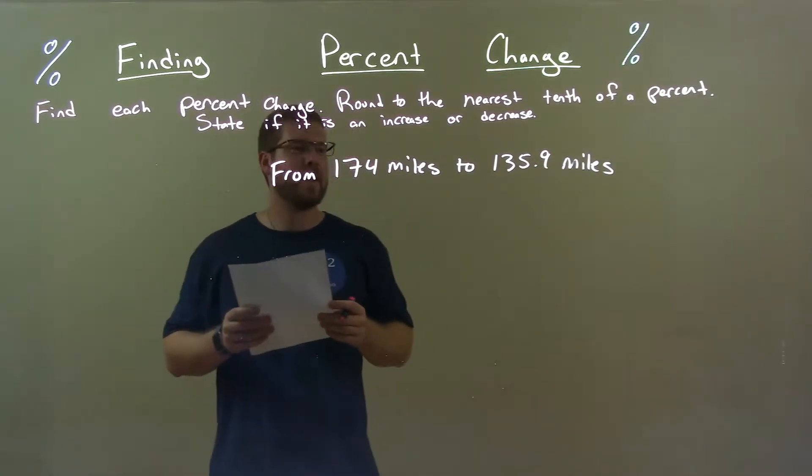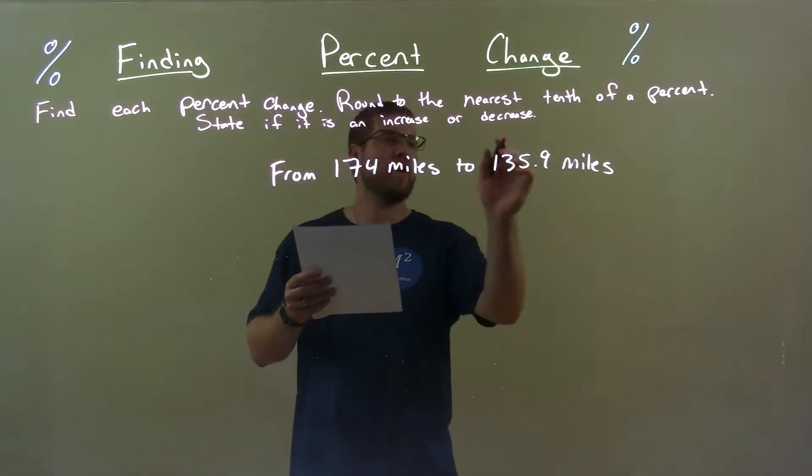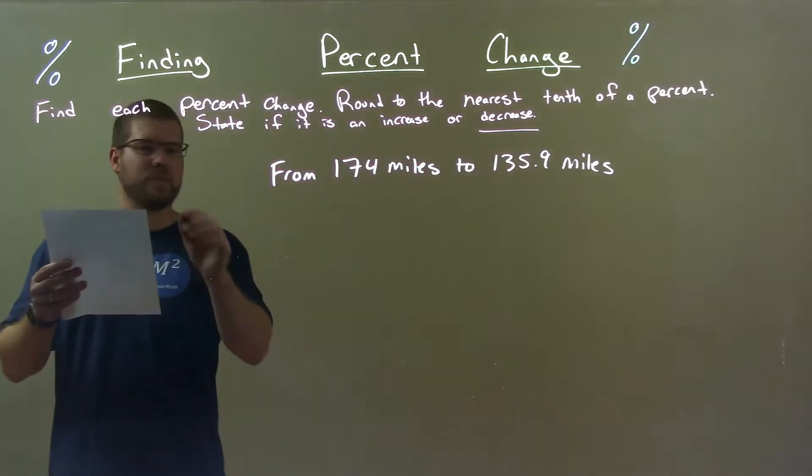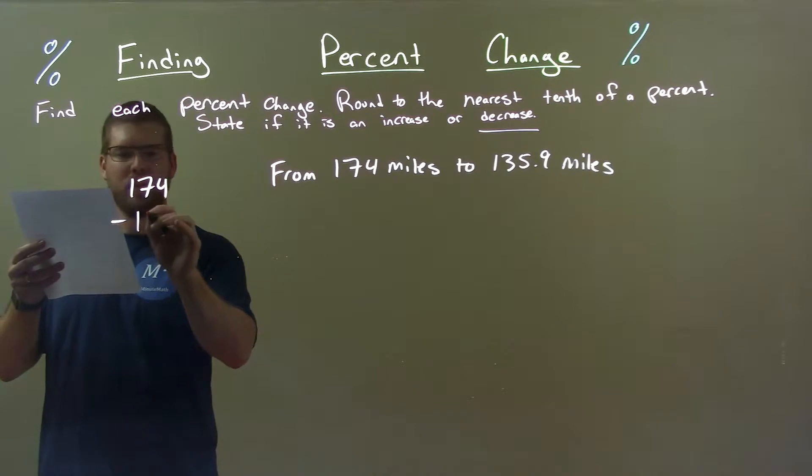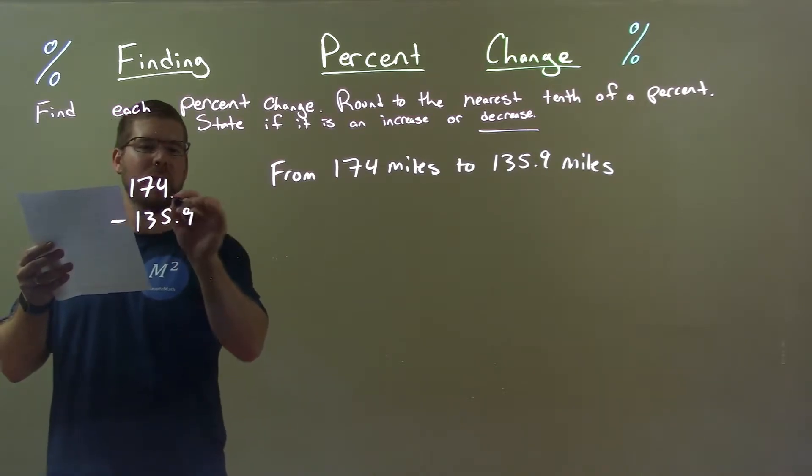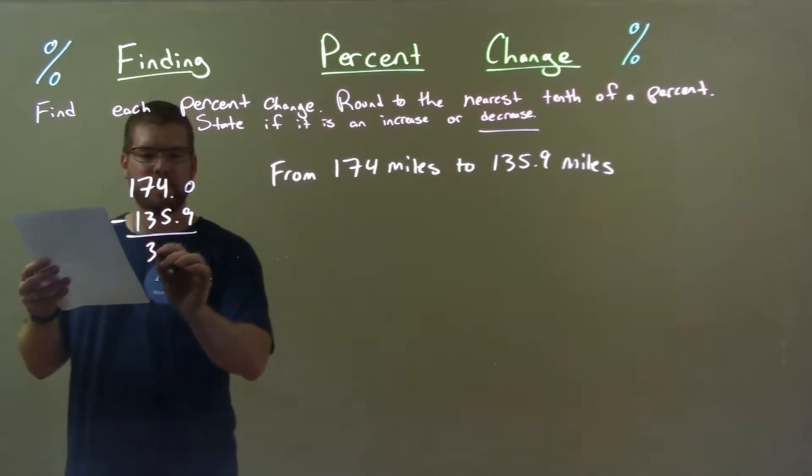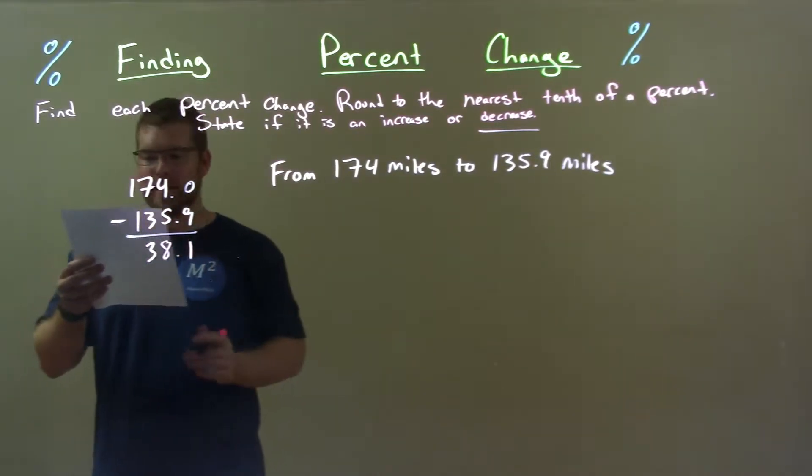First thing we recognize here is that this is what we call a decrease. We're going down. Now, find the difference between the two. 174 minus 135.9, and we put the .0 there for the 174, and we get 38.1 right there.